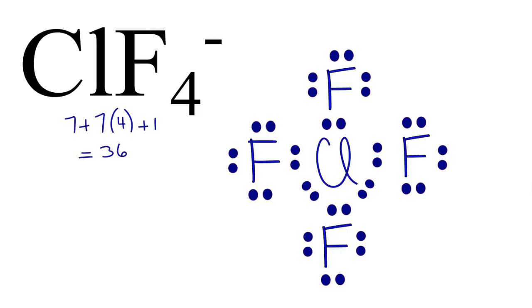Chlorine is an exception, and it can have more than 8, and it does. It has 12 valence electrons. So this is the Lewis structure for ClF4 minus. This is Dr. B, and thanks for watching.